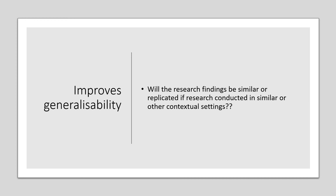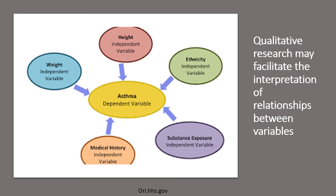Qualitative research may facilitate the interpretation of relationships between variables. Quantitative research readily allows the researcher to establish relationships among variables, but it is often weak when it comes to exploring the reasons for those relationships. A qualitative study can be used to help explain the factors underlying those broad relationships. For example, if using dramatics in the class to explain a concept engages students, the quantitative survey shows they are engaged, but the qualitative survey reveals why — and different students may have different reasons for engagement.